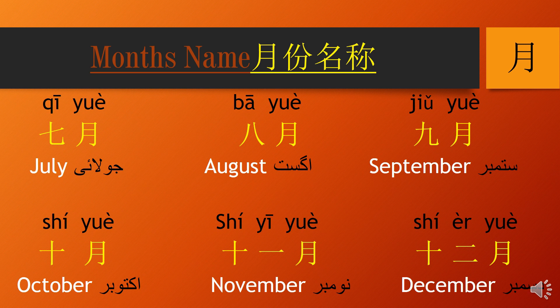十月, 十月 — October — daswa mahina. 十一月, 十一月 — November — yaadwa mahina. 十二月, 十二月 — December — barwa mahina.